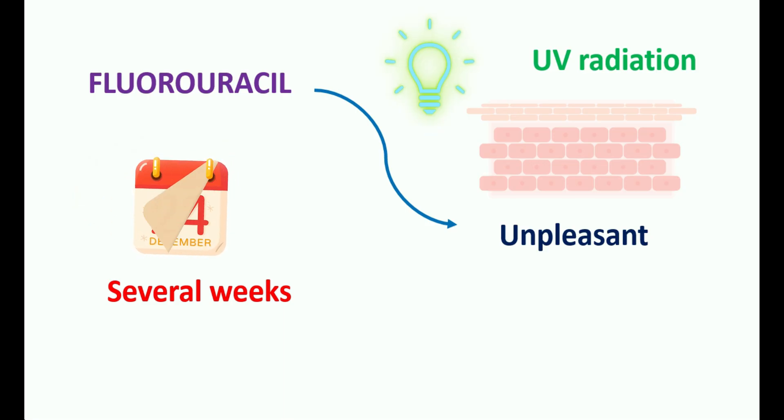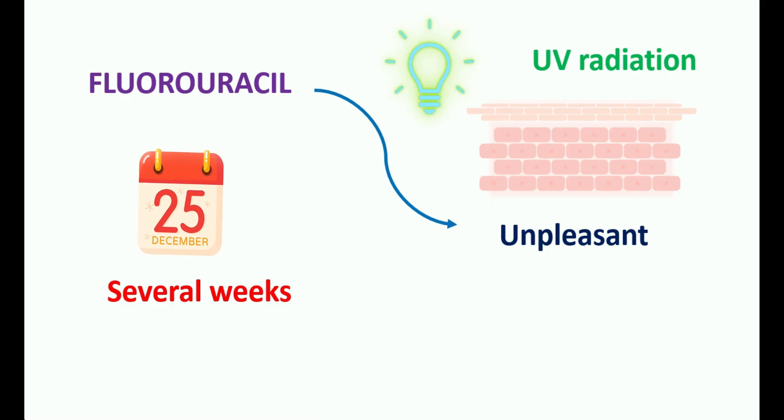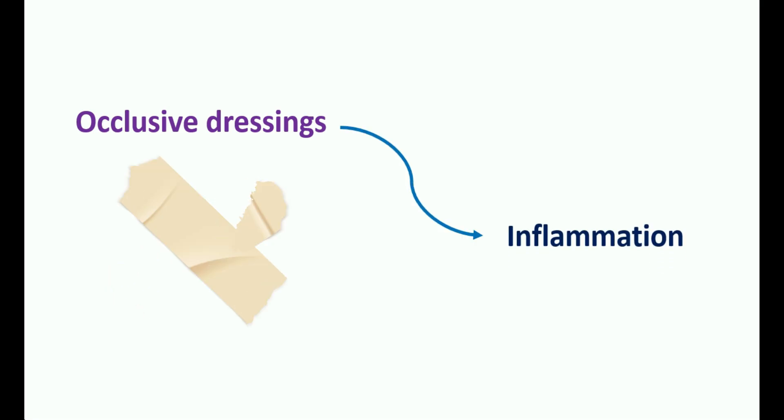The applied area may be more sensitive, so you should avoid direct exposure to UV radiation, which may produce severe inflammation. Care should be taken to avoid direct exposure to UV radiation. When using occlusive dressings, they may bring the medication into contact with adjacent skin. Accidental contact with skin surfaces around the applied area may produce inflammation, so care should be taken to avoid any contact with normal skin.